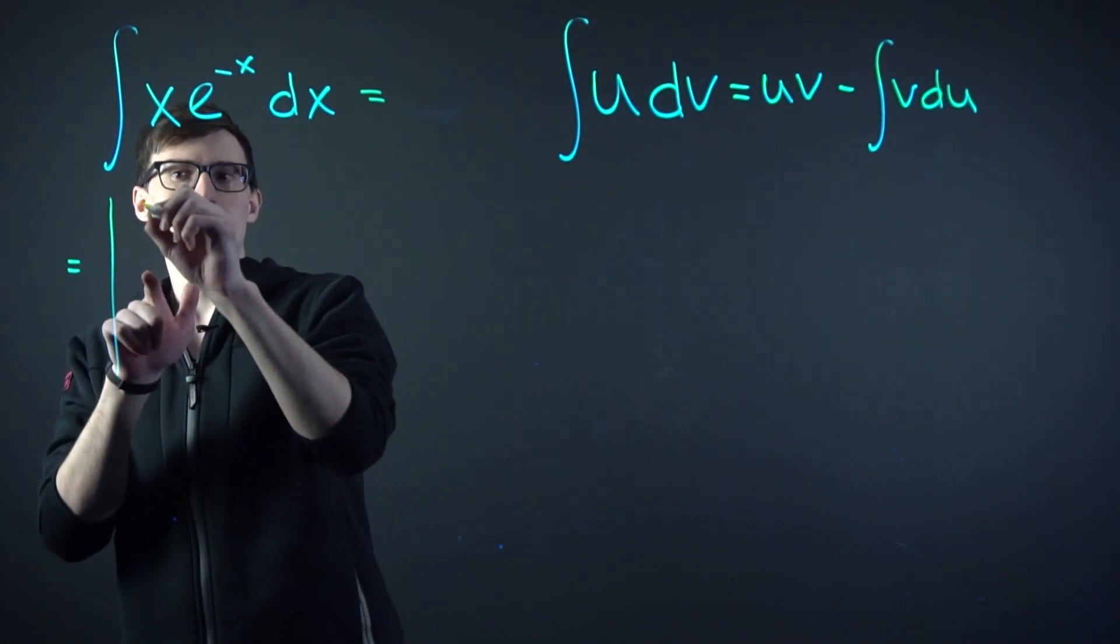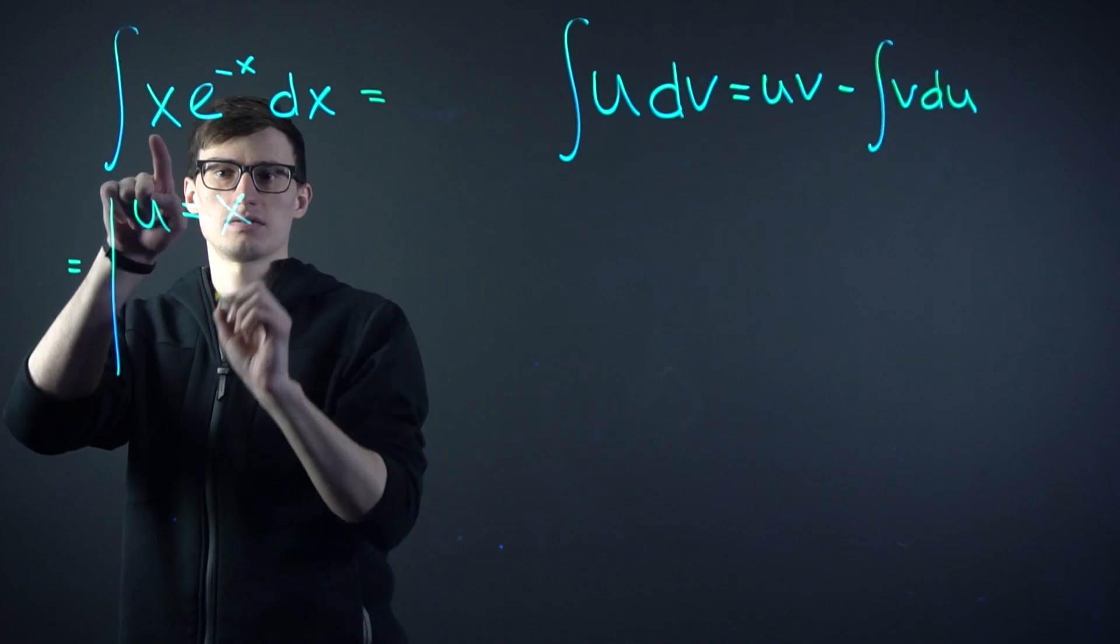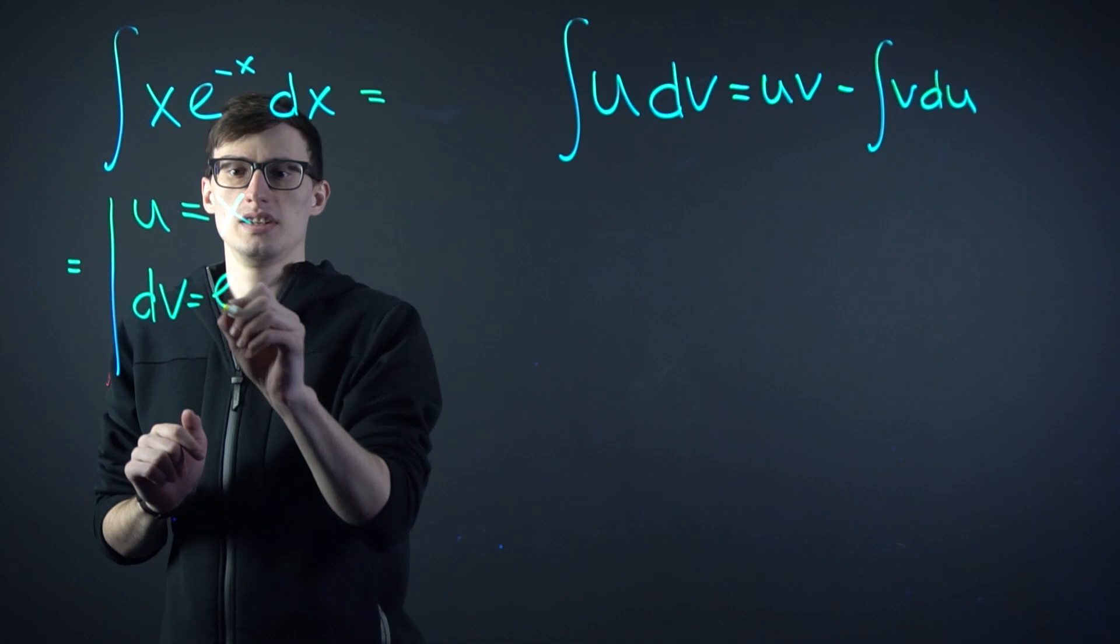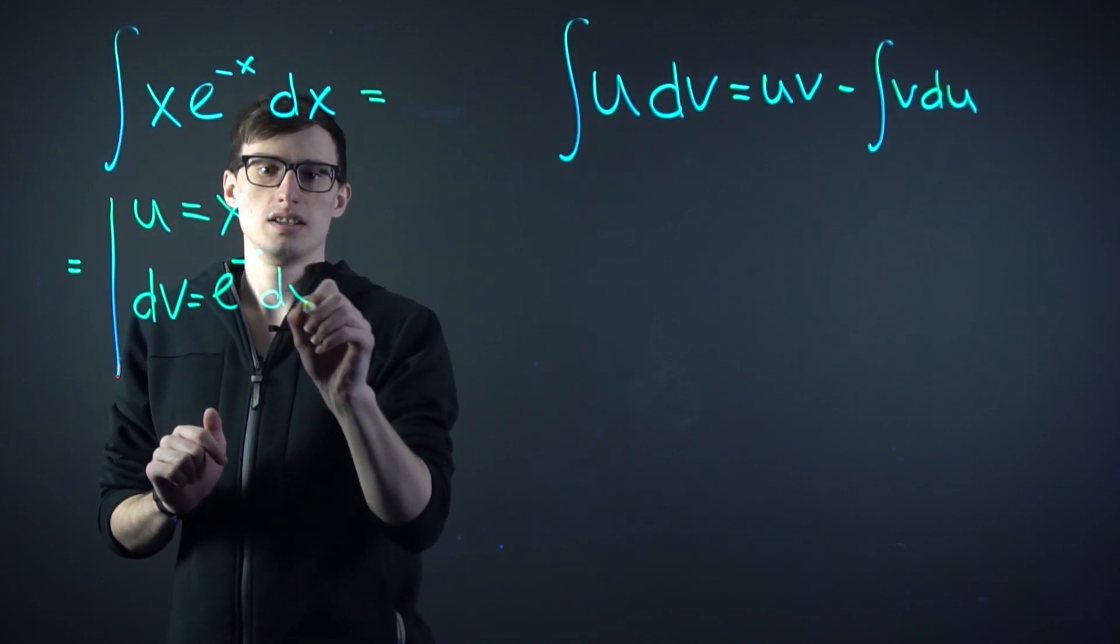U in this case would be x. And dv would obviously be everything else. It would be e to the minus x dx.